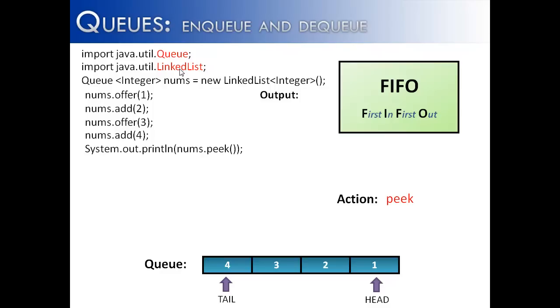The next operation that I want to do is to peek and see what is at the head of the queue, and it should return one, and it does exactly that.